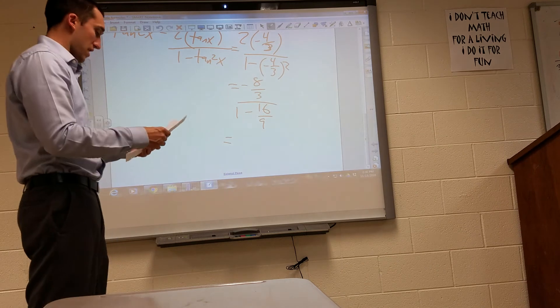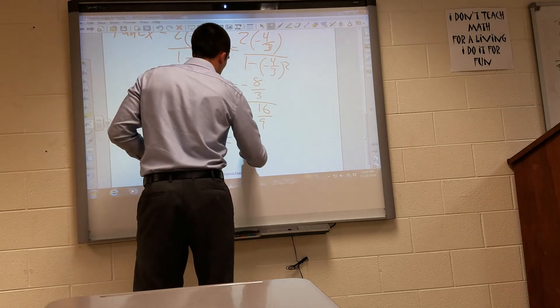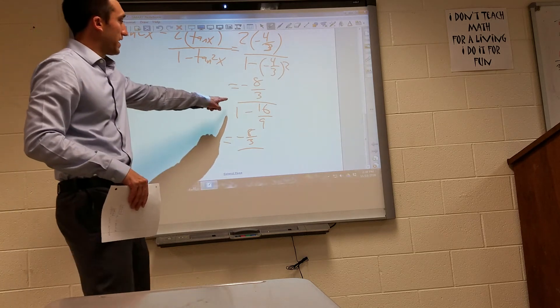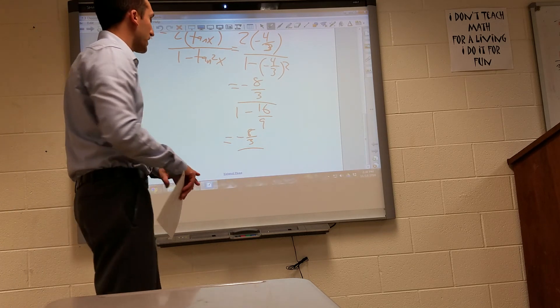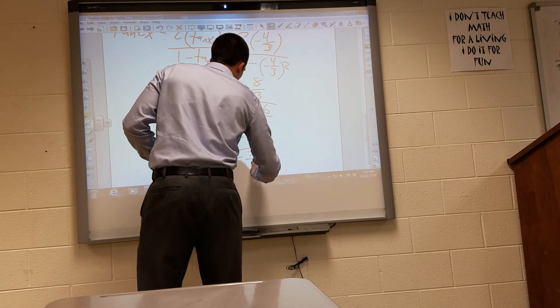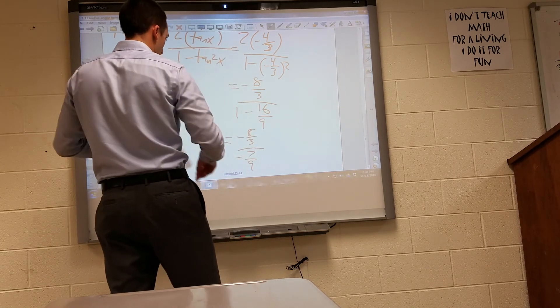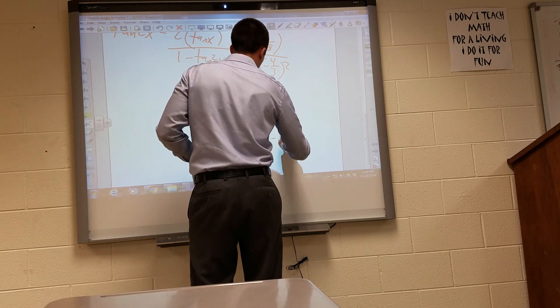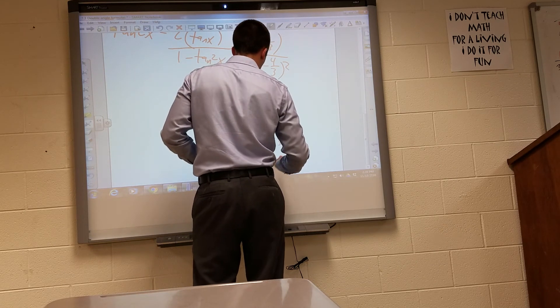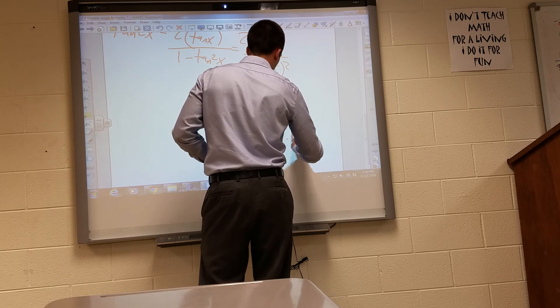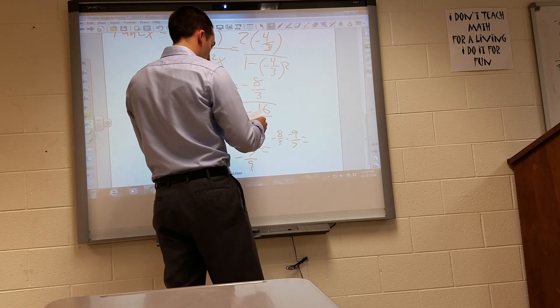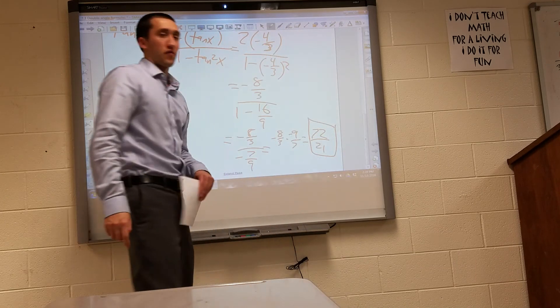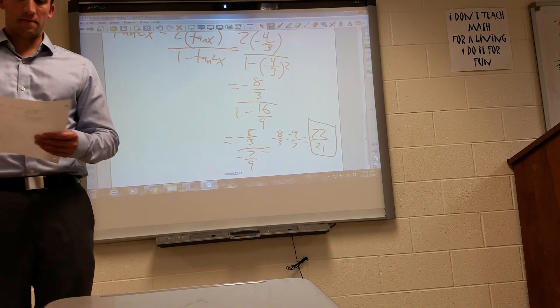Continue on simplifying. I get a negative eight-thirds over, so that would be nine-ninths minus 16 ninths, gives me a negative seven-ninths. And yep, that one checks. Then I just flip and multiply. So I end up getting negative eight-thirds times negative nine-sevenths equals 72 over 21. That's as far as I can go because that won't simplify any further.